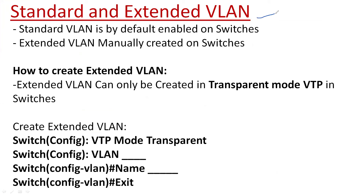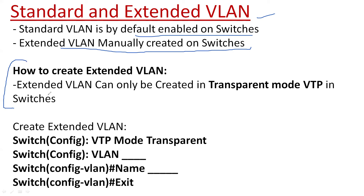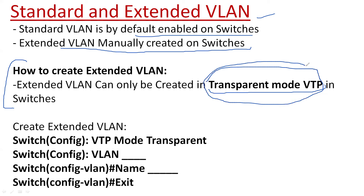Standard VLAN is by default enabled, but extended VLAN must be enabled manually. To create an extended VLAN, there is a protocol called VTP — in VTP transparent mode, you can create the extended VLAN. We are going to discuss this in our next topic, which is VLAN Trunking Protocol.